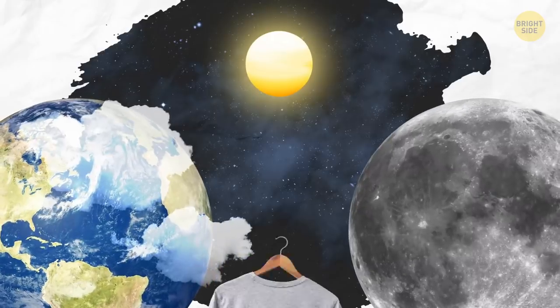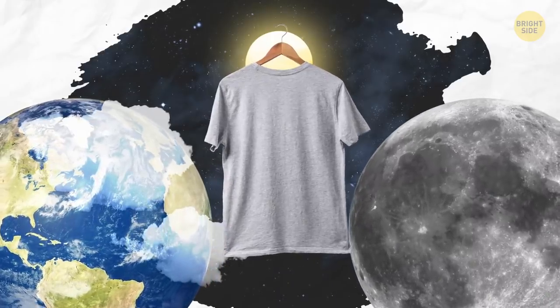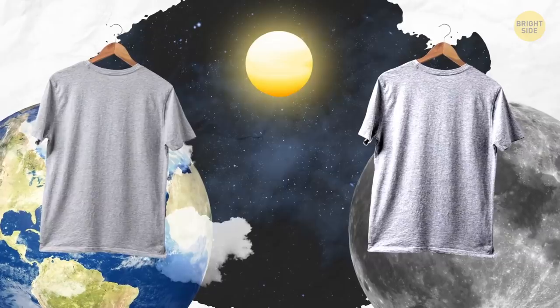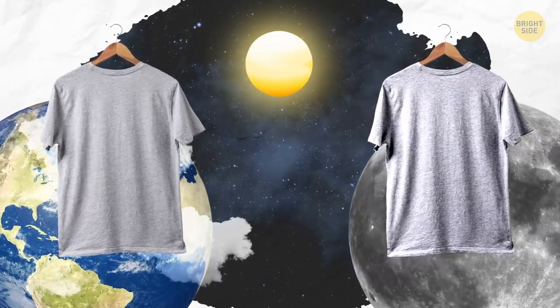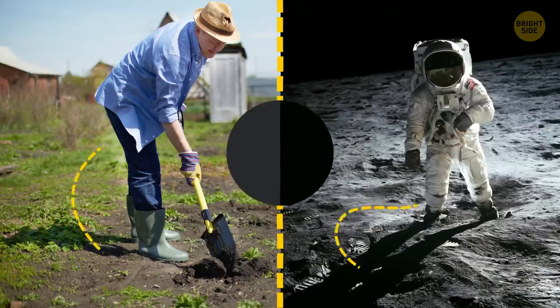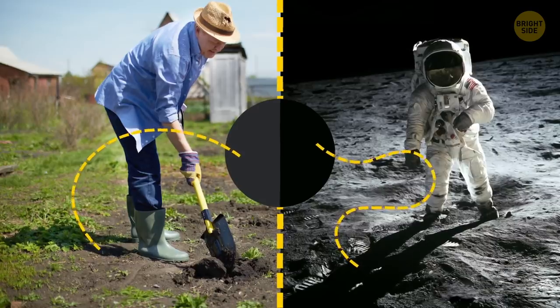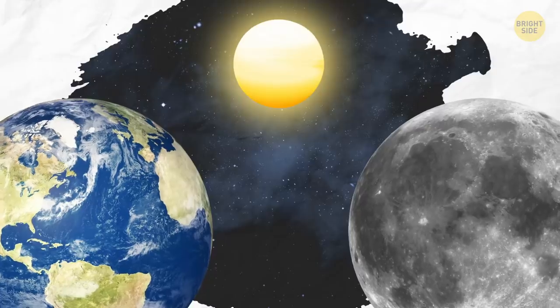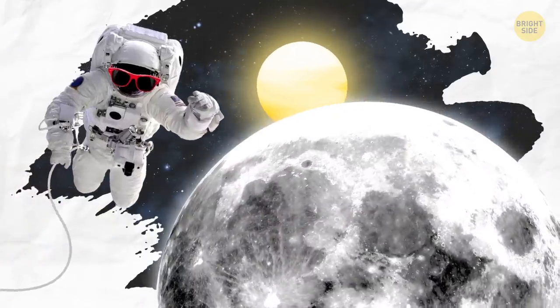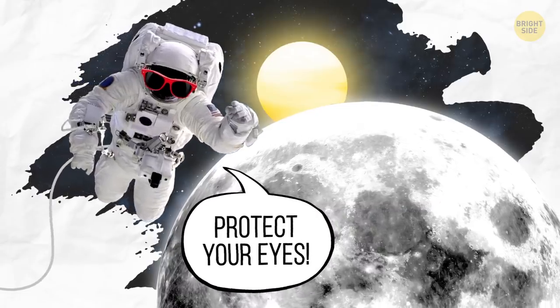Dark and light look way more contrasted on the Moon. On our planet, air diffuses sunlight, so objects remain a little illuminated in the shadows. There is no air on the Moon, so shadows are blacker. But when there's light, it shines on the Moon much stronger because of its reflective dust.